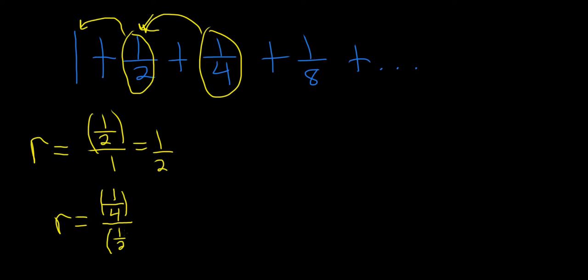And when you take 1 fourth and you divide it by 1 half, you're really doing 1 fourth times the reciprocal of 1 half, so 2 over 1. So that's just going to be 1 half. So in any case, we get 1 half.